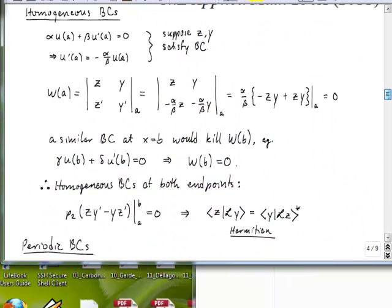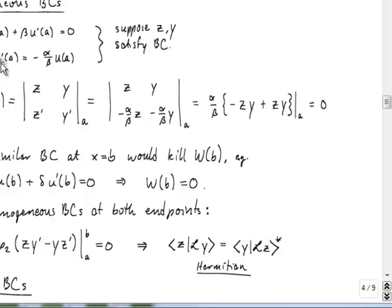So what we want to do here is also show that if we start with this Robin boundary condition, so any function that we consider will have the property that a linear combination of the function and the function's derivative at point A have to add to zero, then we have that U prime of A is just proportional to the value of U at that particular boundary.